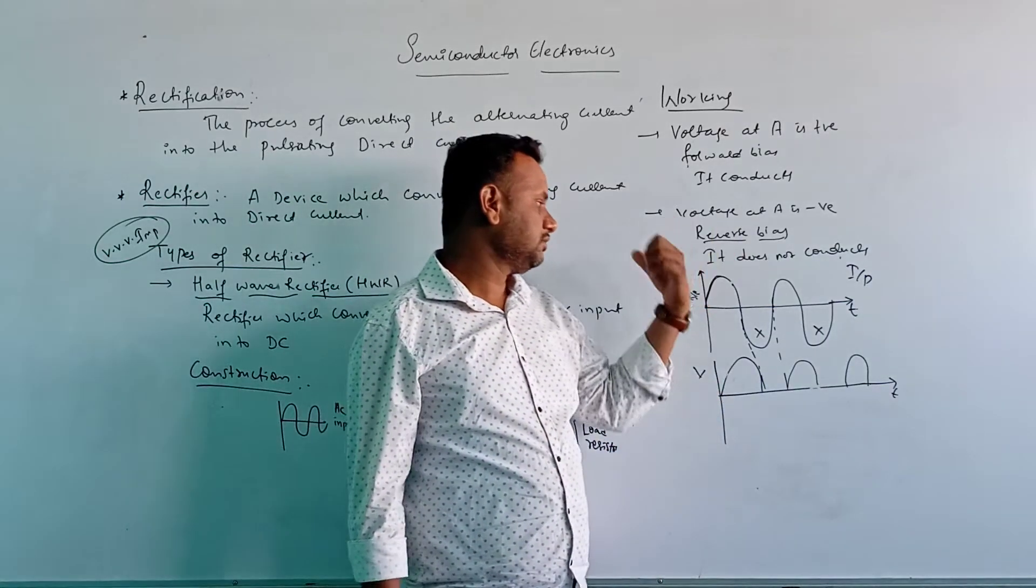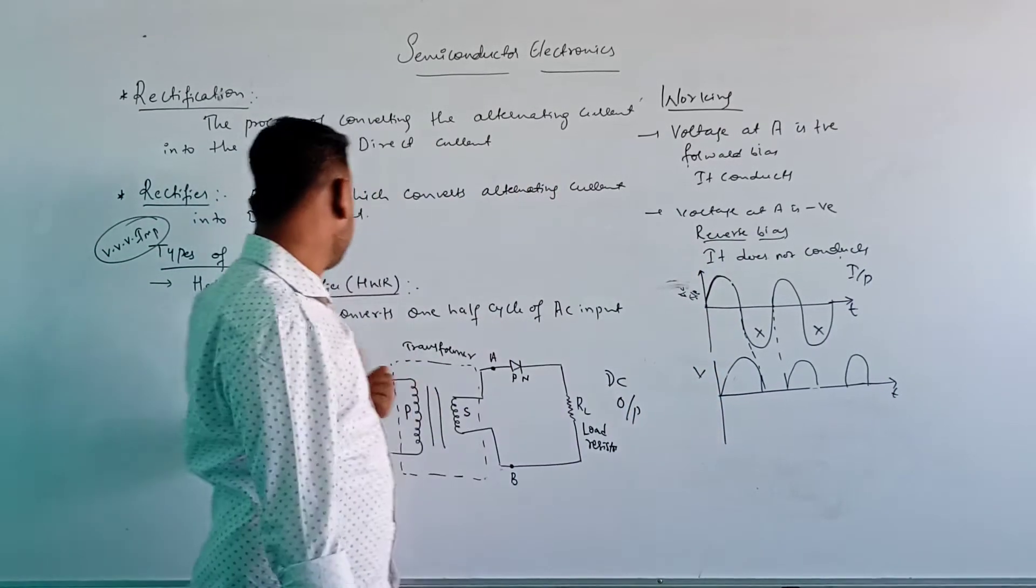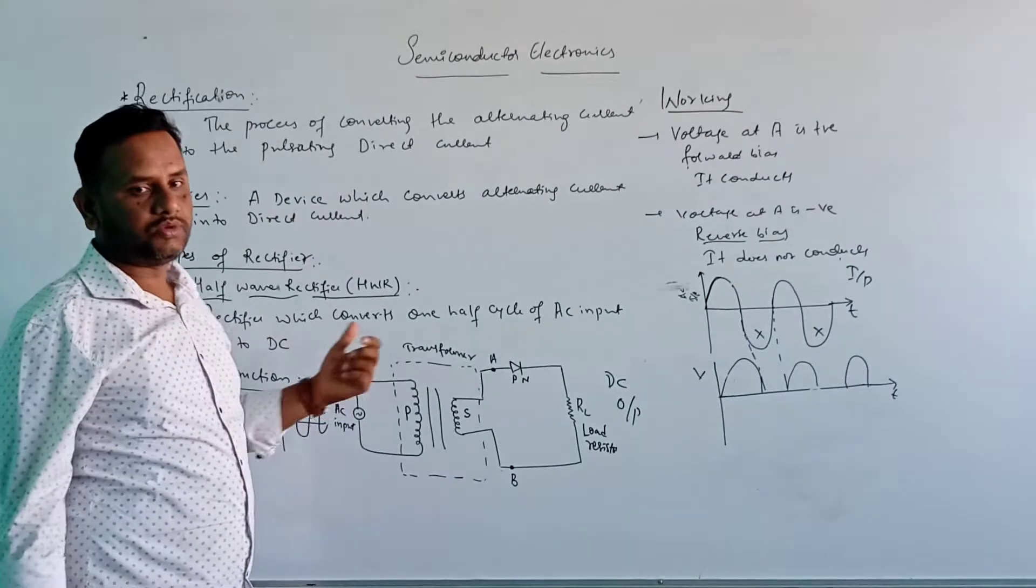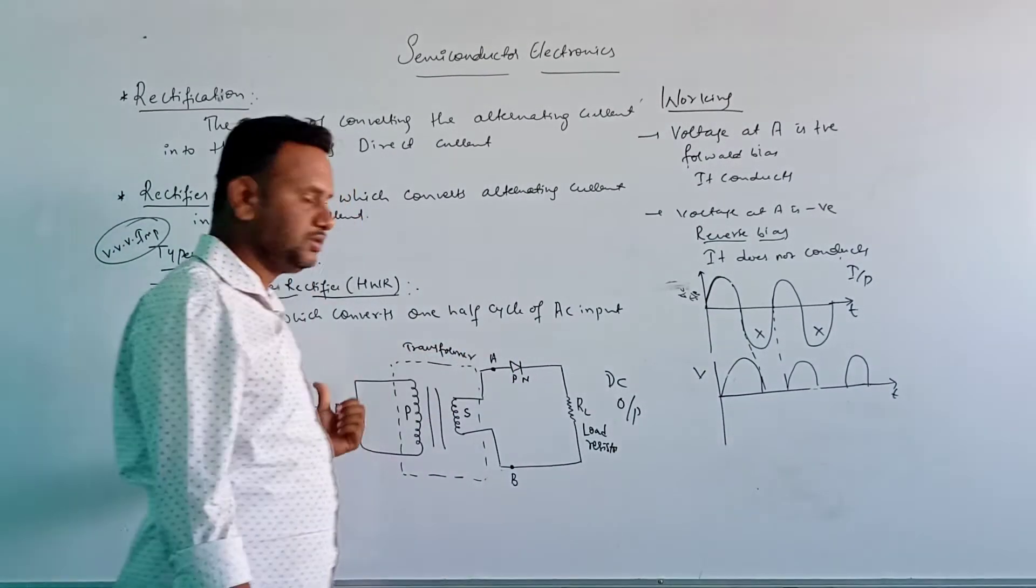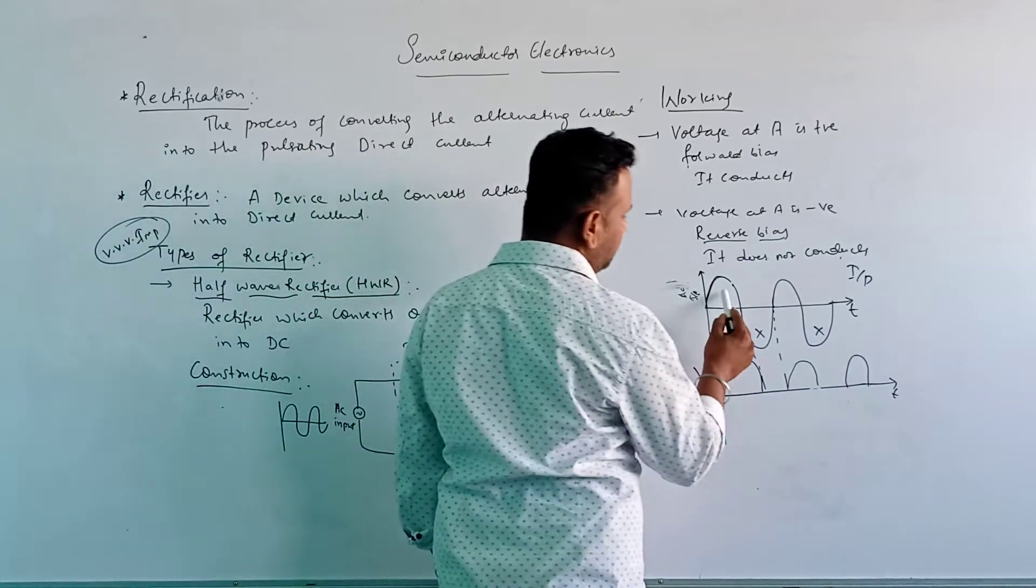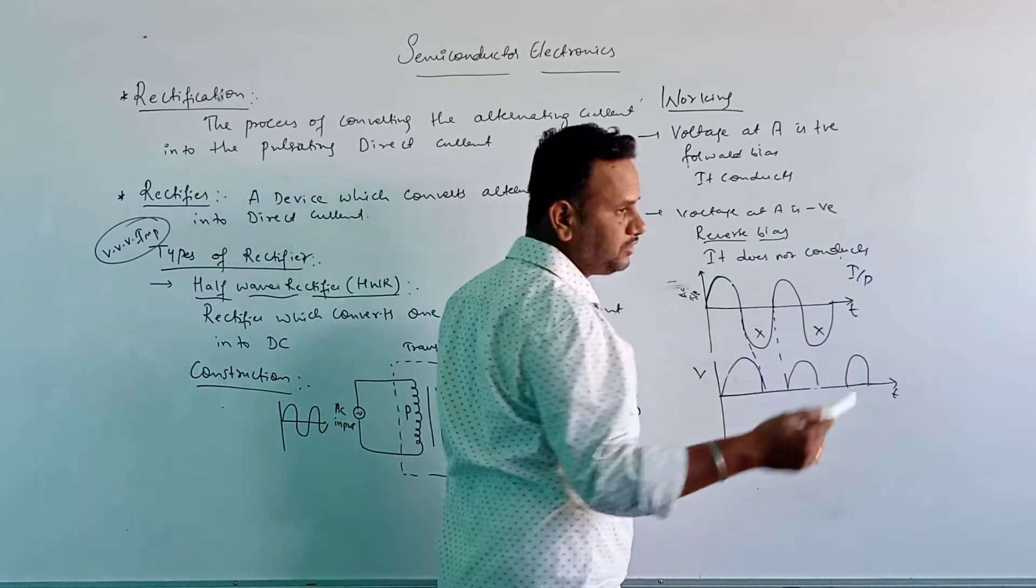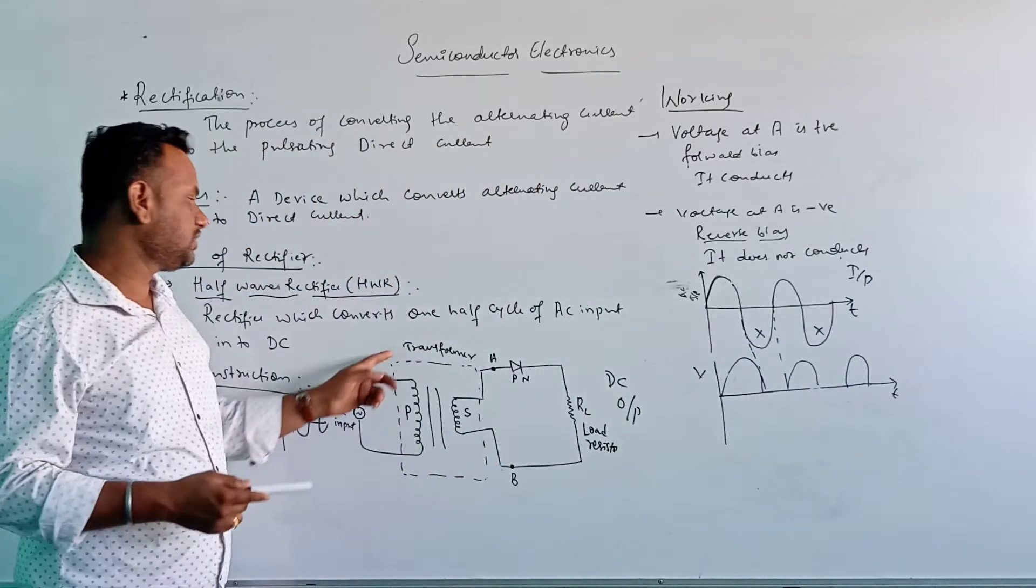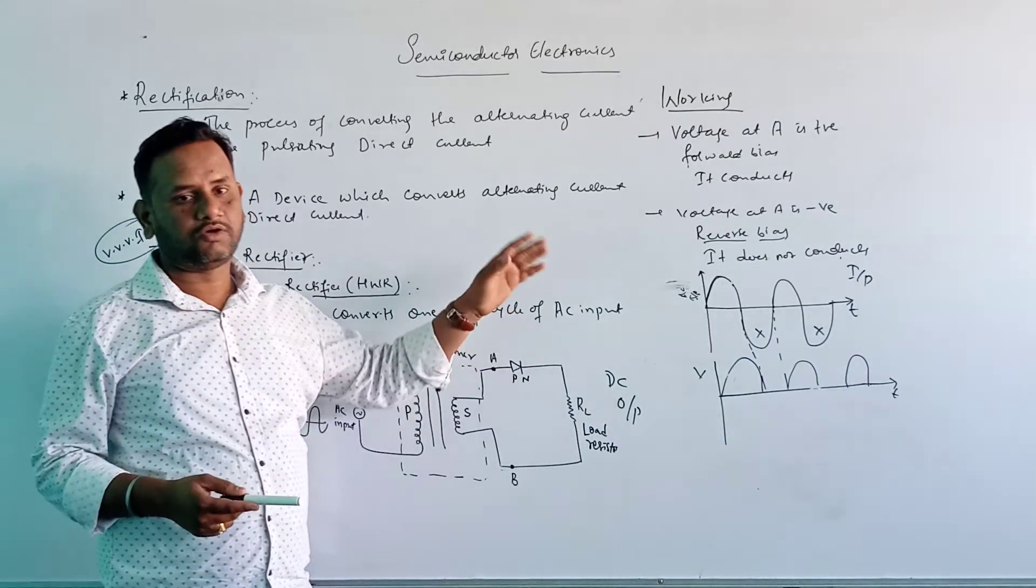So this is how the half-wave rectifier converts one half of the AC input into DC output. Every time we are using only one half cycle of the AC input as output.